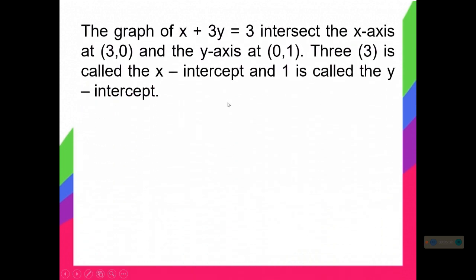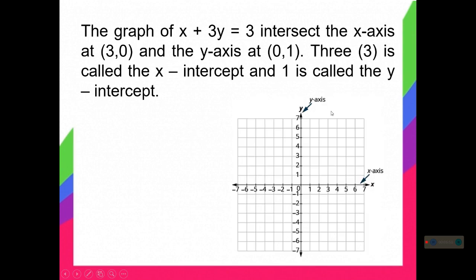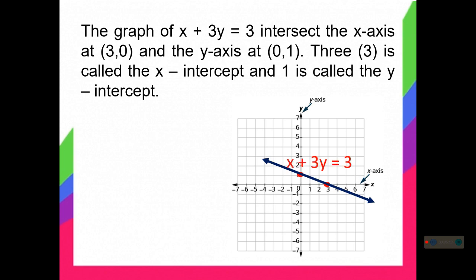For us to graph, the graph of x plus 3y equals 3 intersects the x-axis at 3, 0 and the y-axis at 0, 1. So 3 is called the x intercept and 1 is called the y intercept. We have to plot 3, 0 on the x-axis and 0, 1 on the y-axis in the Cartesian plane. Then we connect the two points and this will serve as the graph of x plus 3y equals 3.